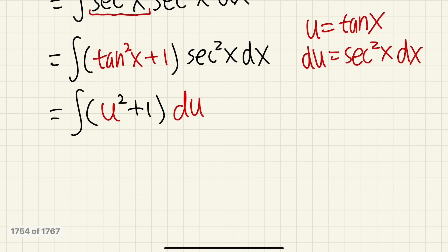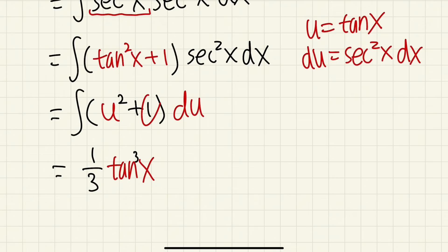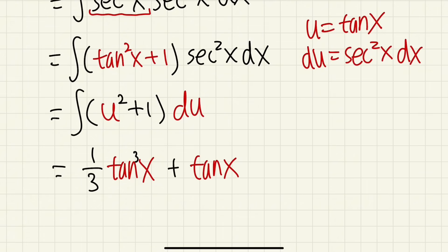Integrating u squared in the u world, we get 1/3 u to the 3rd power, and u is tangent x. Integrating 1 in the u world we get u, which is tangent x. Adding them up, we are all done: 1/3 tan³(x) + tan(x) + C.